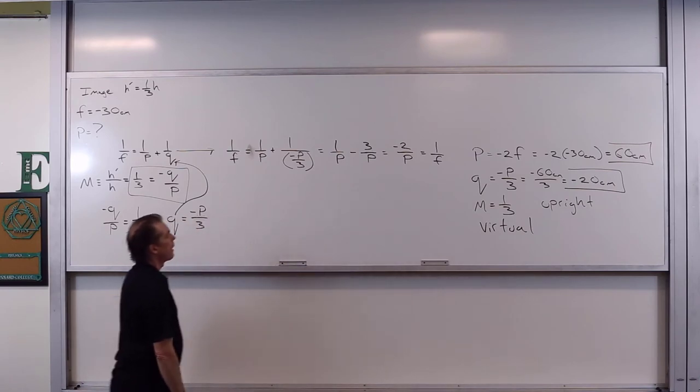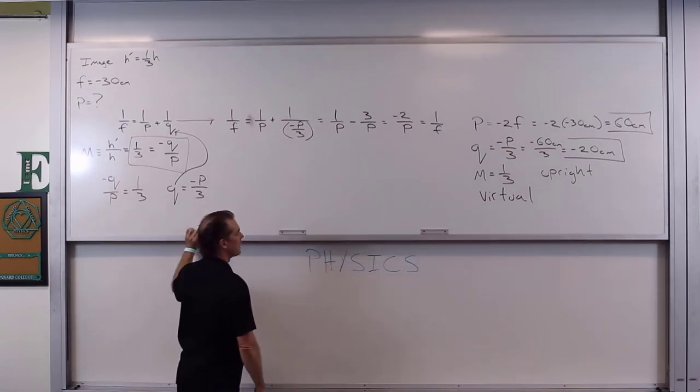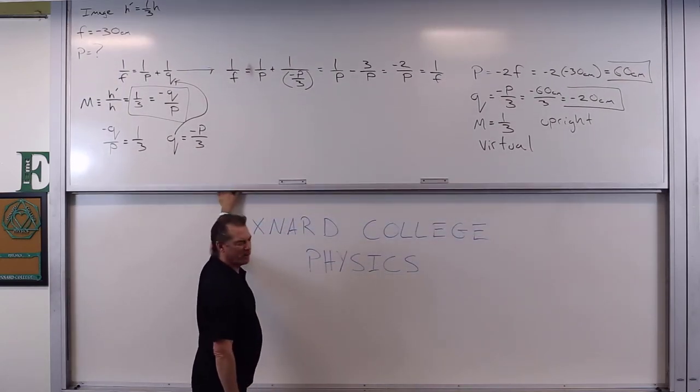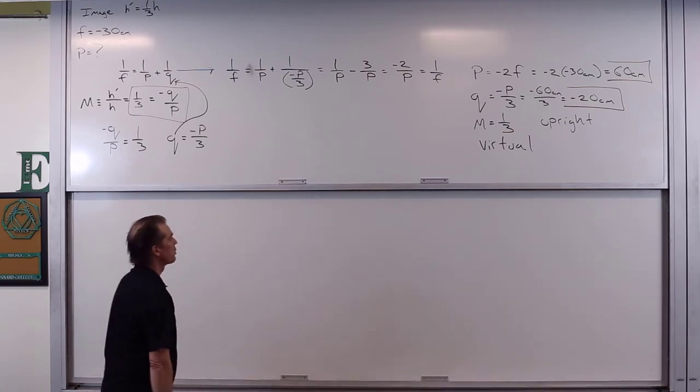And there we go. We've got basically everything out of a little bit. I don't want to say nothing, because it wasn't actually nothing. It is something. All right, so what's left? Ray diagram.